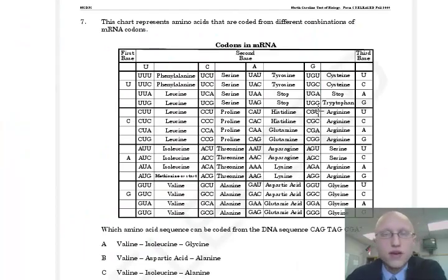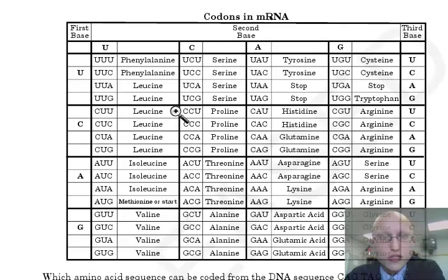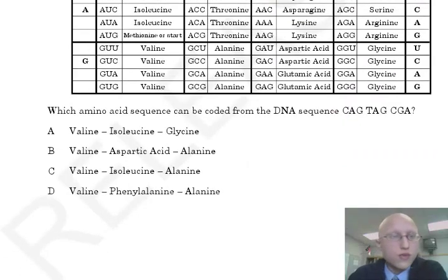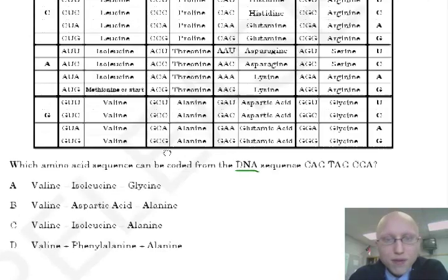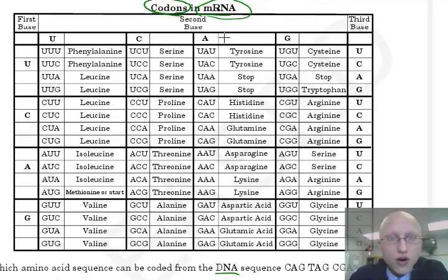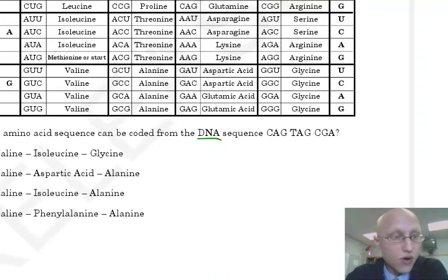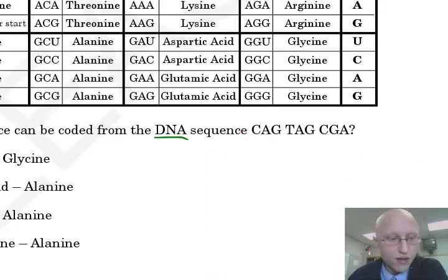This is the problem right from the EOC release test. They give you a big chart, codons in mRNA. Whenever you're looking at a chart in the EOC, you want to look at the title. Because the title tells you what's going on. In this case, codons means three-letter base sequences, and mRNA means you're going to see U's. So let's skip down to the question. It says, Which amino acid sequence can be coded from the DNA sequence? C-A-G-T-A-G-C-G-A. Notice, I underline DNA. They give you that this is a DNA sequence. But there's a T in the DNA sequence. This chart has no T's in it because it's RNA. So you need to get a sequence, this DNA sequence, into RNA. So I'm going to zoom in. Your first step is to take this DNA sequence and make it into RNA.